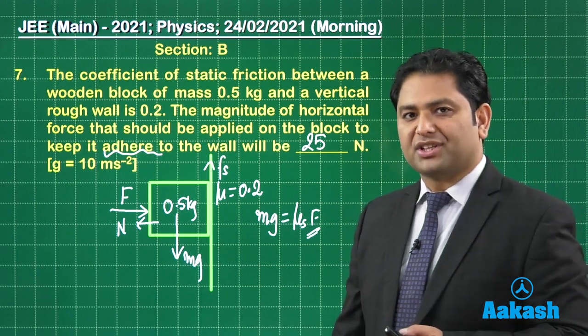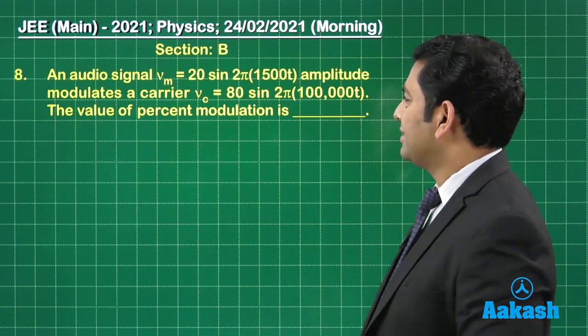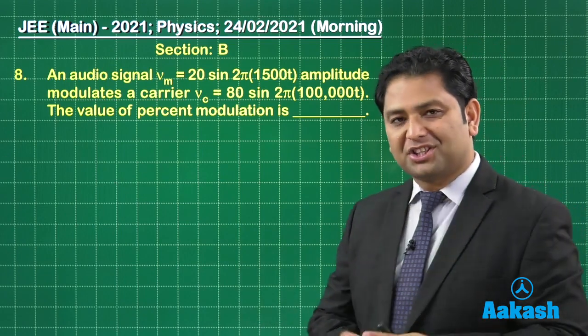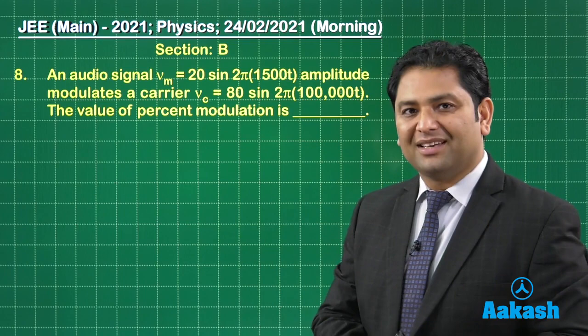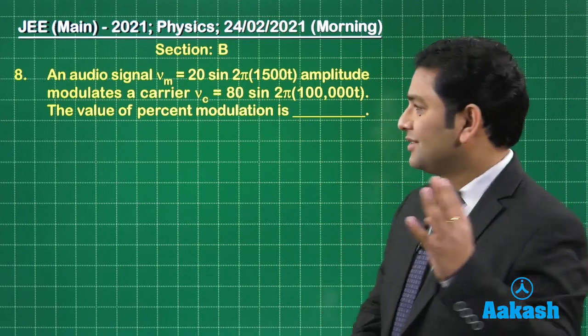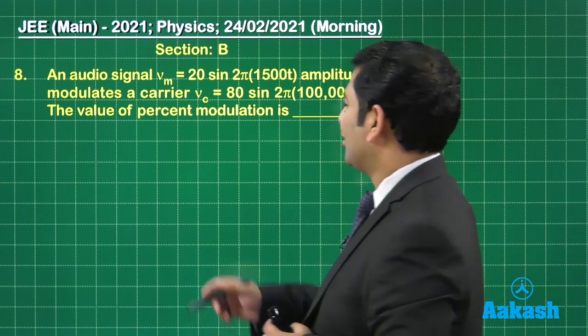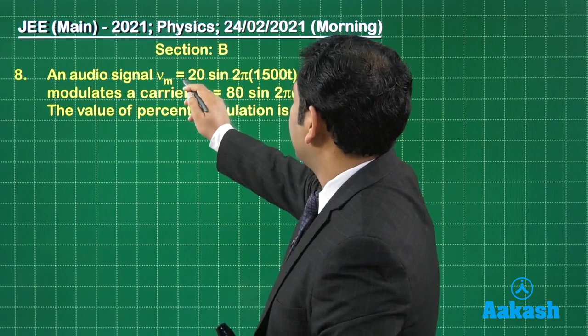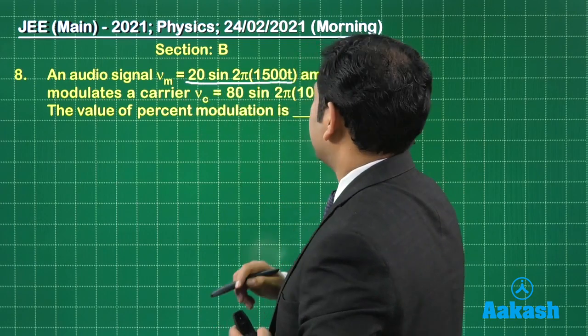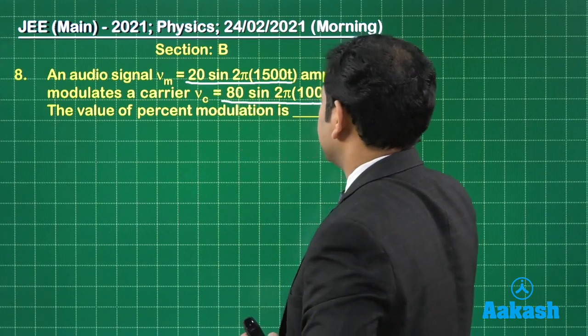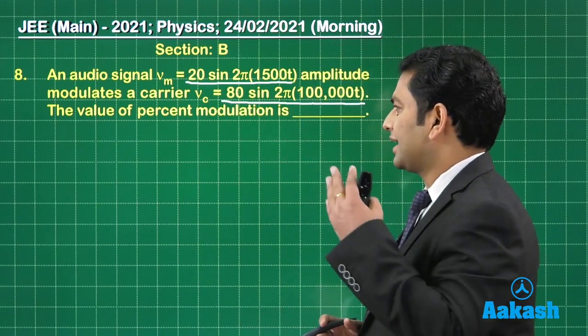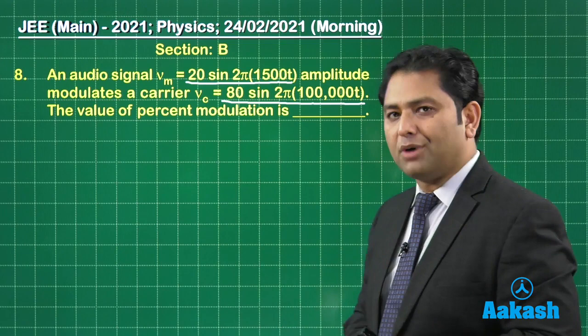The eighth question, let's see. Question number eight, now it's from principle of communication. This is another topic which is present only in JE main, not in JE advance. So you got to be careful with that. The audio signal, you could see, this is the message signal or the modulating signal, this is the carrier signal. We got to calculate the percentage modulation.